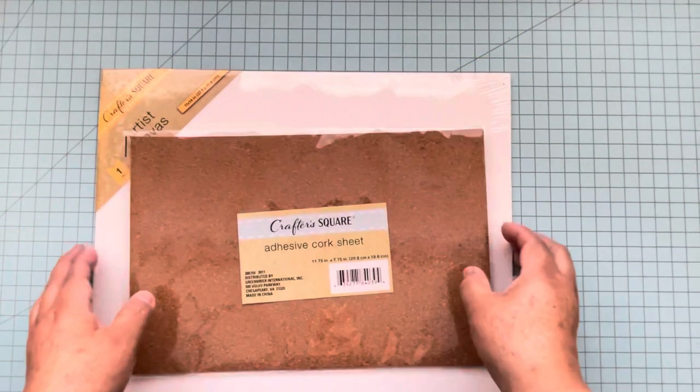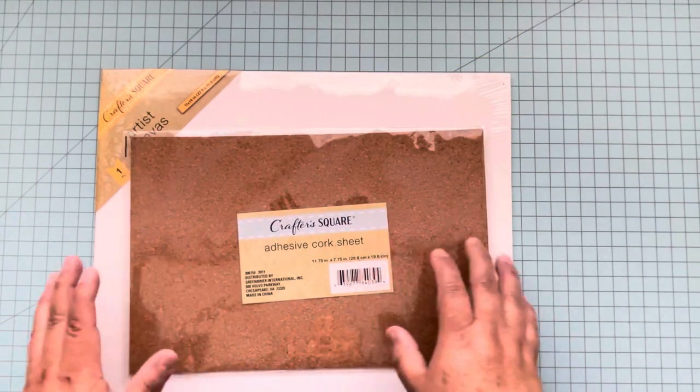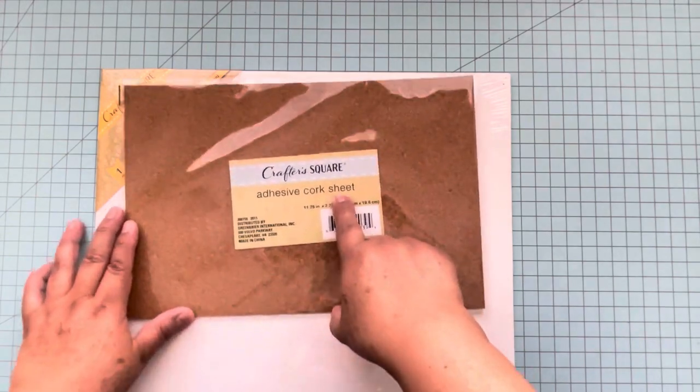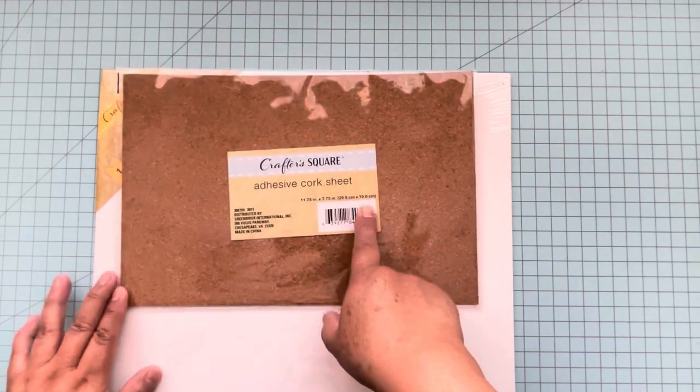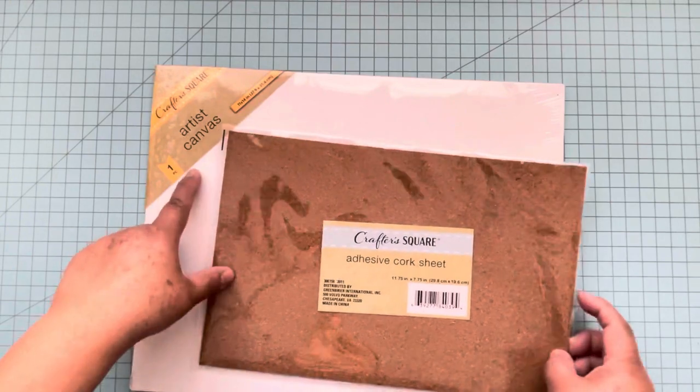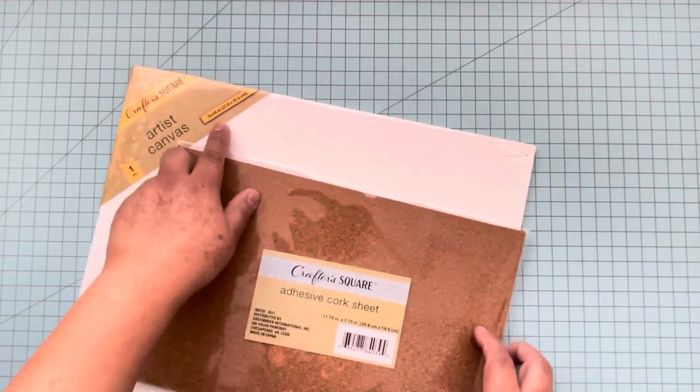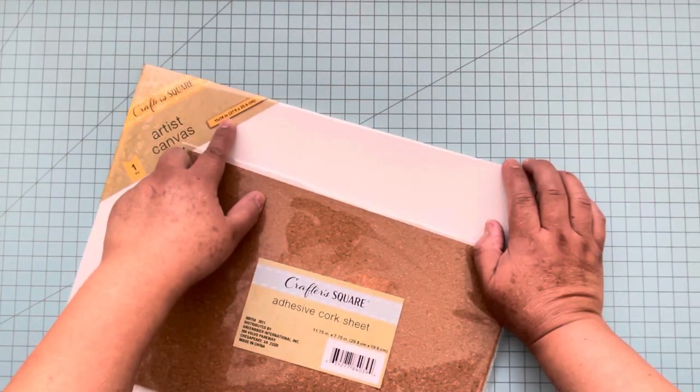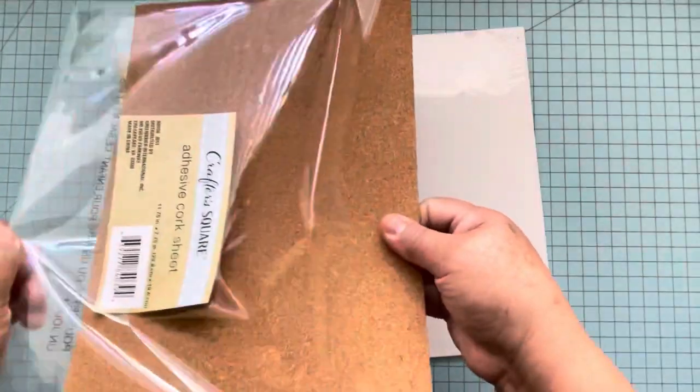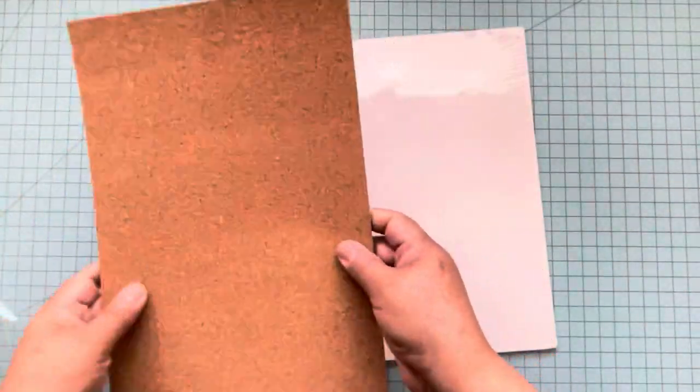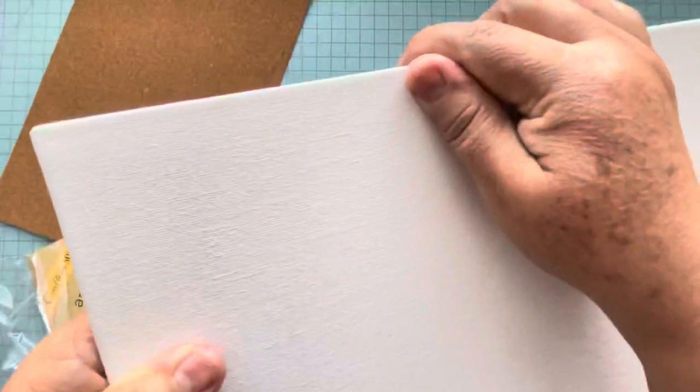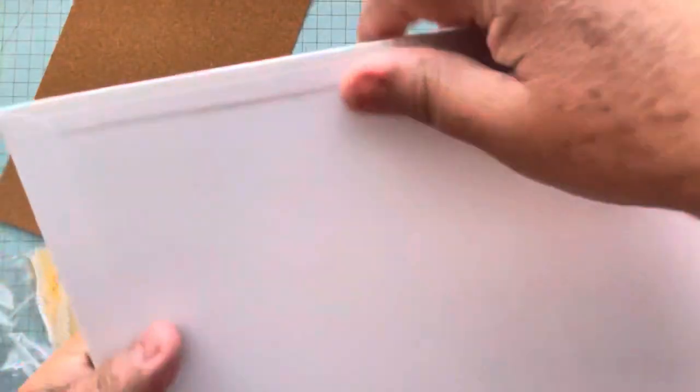Hello everyone, this is Christy. Today I'm going to make a board using a Crafter's Square adhesive cork board and an artist canvas. The size is 11 by 14 inches. As you can see, it has adhesive, and this is the canvas. This one has chipboard on the back.